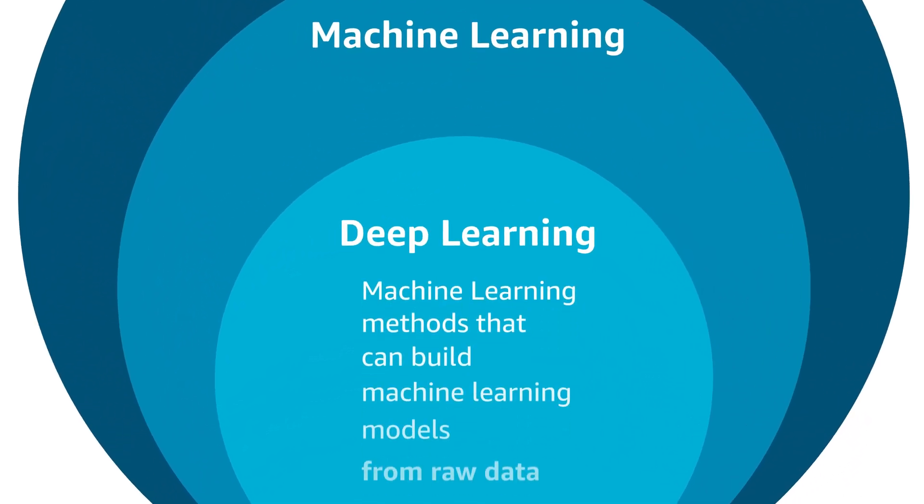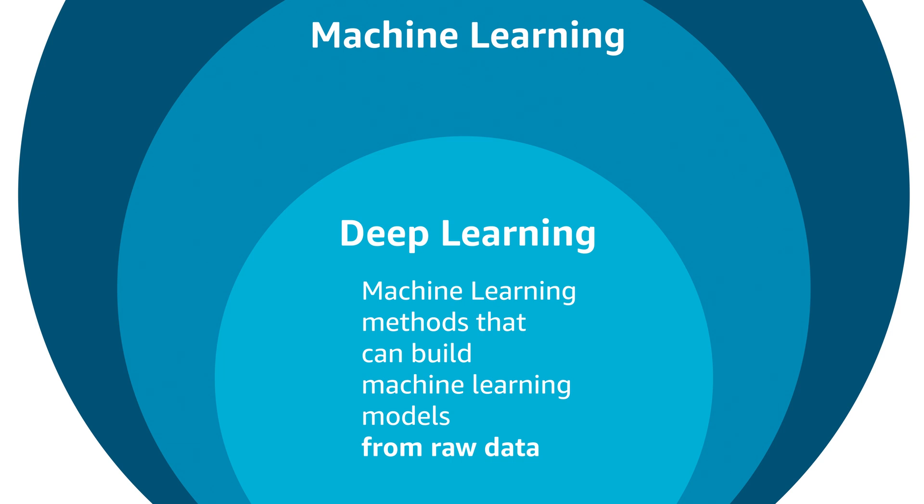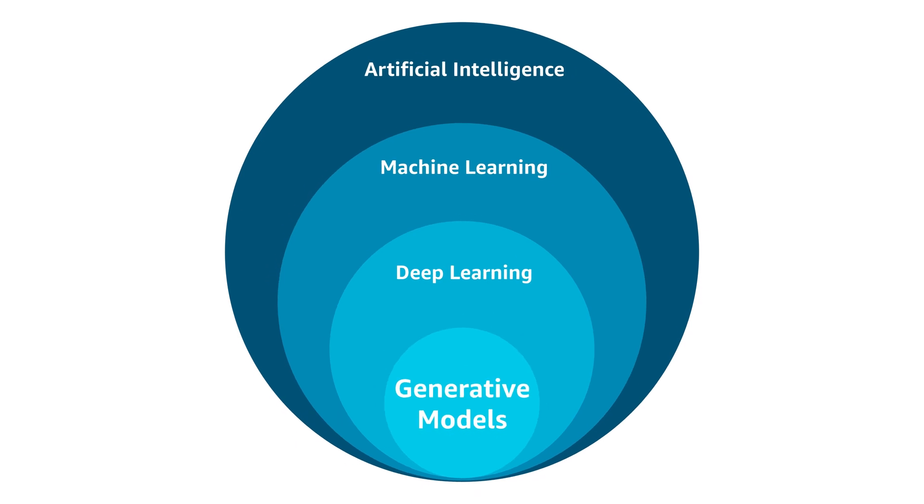The term 'deep' is used as these machine learning systems typically use a multitude of processing layers to train and build such a model. Typical applications include image classification or speech recognition. The most recent and exciting development is the so-called generative models, or Gen AI.